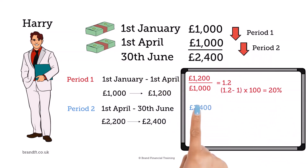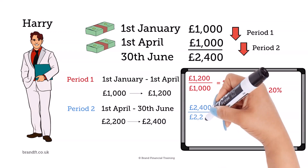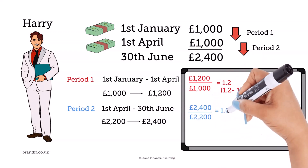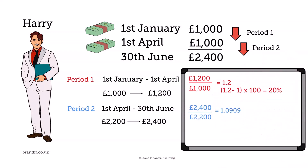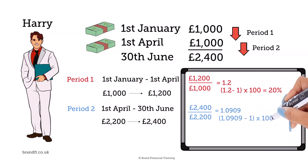If we divide £2,400 by £2,200, this gives us a figure of 1.0909. Deduct the 1 and multiply by 100 to give us a return of 9.09%.